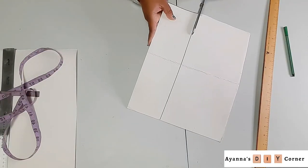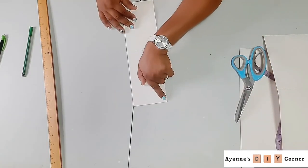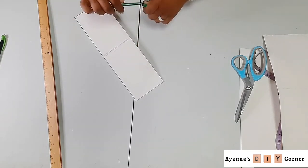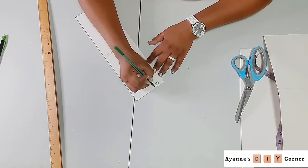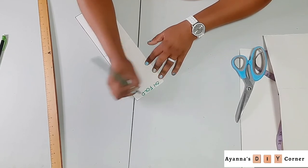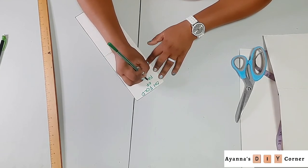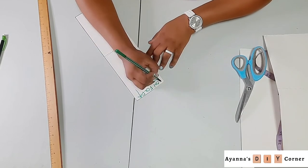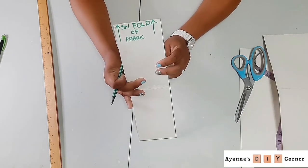Once you have that, go ahead and cut that shape out. Use one side and identify that this is what you'll be placing on the fold of your fabric. Write and draw arrows so you remember this is the edge to place on the fold when it's time to create the piece.